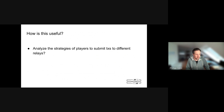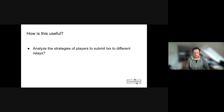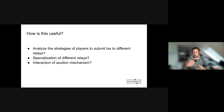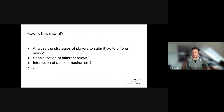How is this useful? You can quickly set up different models of what players are there and what they're doing. You can analyze the strategies of players — what transactions they submit, whether they submit to all relays or focus on specific ones, what happens if relays specialize or run different mechanisms, or if they're censoring. You can also analyze how different allocation mechanisms happening simultaneously interact. In short, what started as a relatively simplified model funded through the FRP is still something we're actively working on.